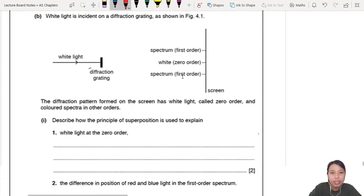White light incident on diffraction grating. Diffraction pattern form has white light zero order. White light there. And color spectra in the other orders. So somehow in the first order you see white light. In the other orders then you see other colors. So why is that? You should remember.